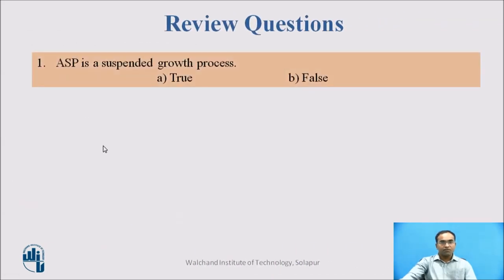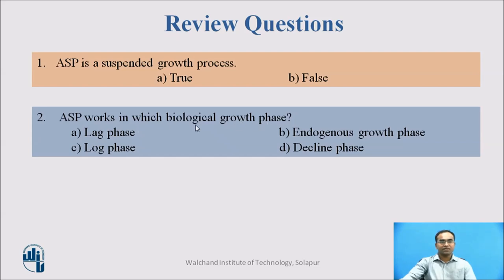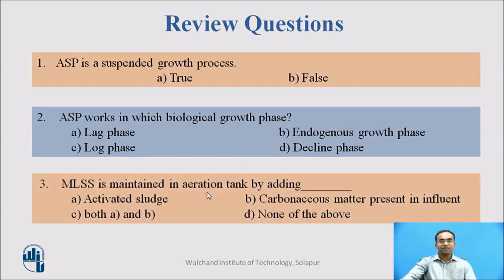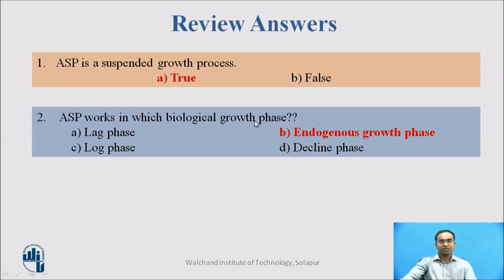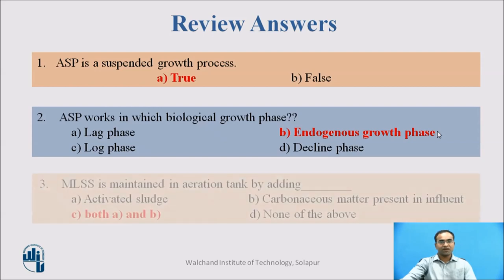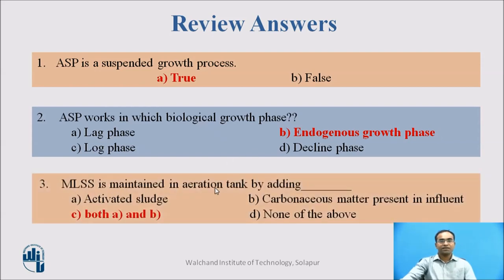Review questions: First, ASP is a suspended growth process — true or false. Second, ASP works with which biological growth phase: lag phase, endogenous growth phase, log phase, or decline phase? Third, MLSS is maintained in the aeration tank by adding: activated sludge, carbonaceous matter present in the influent, both A and B, or none of the above. Answers: ASP is always a suspended growth process — the carbonaceous matter present in the wastewater is always in suspension form. ASP always works in the endogenous growth phase. MLSS is maintained in the aeration tank by both activated sludge and carbonaceous matter present in the influent.